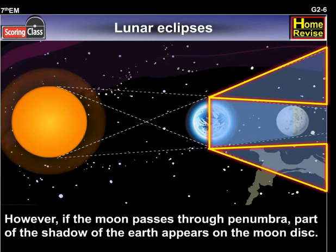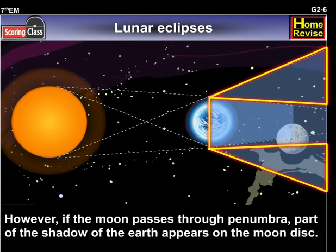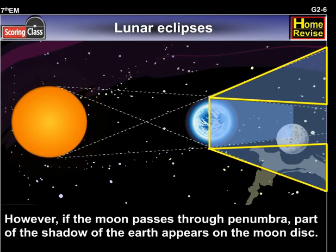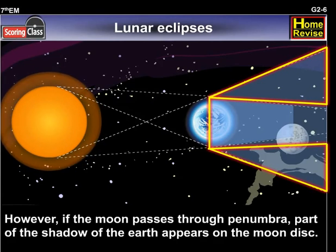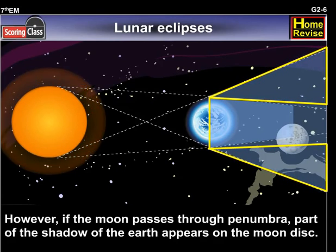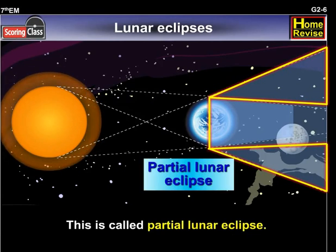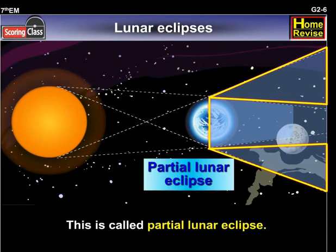However, if the moon passes through the penumbra, part of the shadow of the earth appears on the moon disk. This is called a partial lunar eclipse.